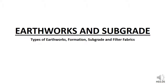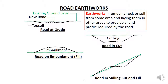In this video we will look at earthworks and the subgrade in a bit more detail. The existing material along the line of a road may be an existing road that needs to be repaired or rebuilt. Usually these roads stay at the original levels so earthworks is not usually required. However other roads may be through grass or bush areas. These are called greenfield sites and the road may need to be built above or below the existing ground level using earthworks.